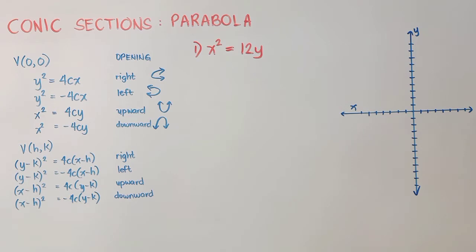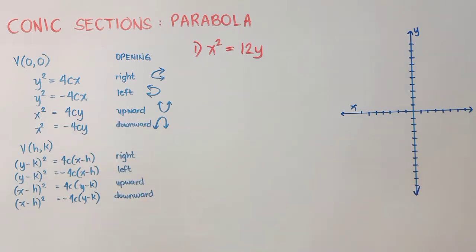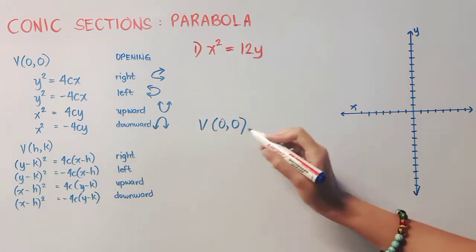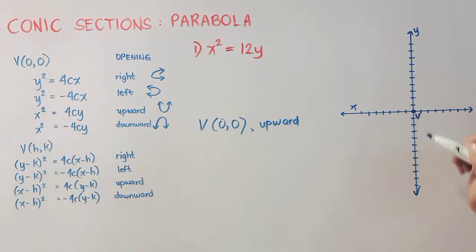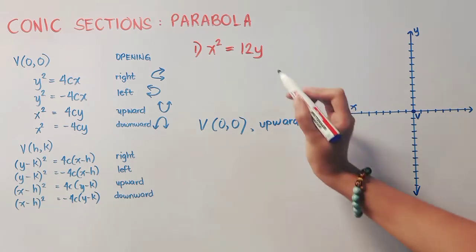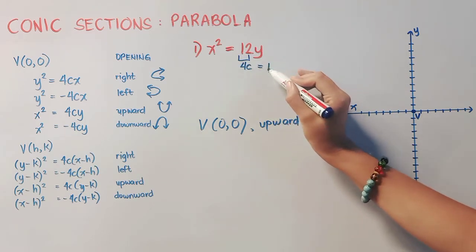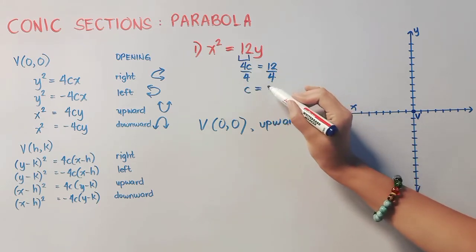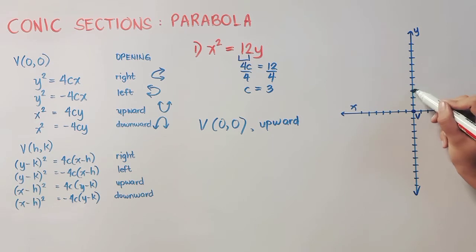We will use the following forms as a guide for graphing. x² = 12y matches the upward-opening form, meaning our vertex is (0, 0) and the parabola opens upward. Plotting that, we label V at (0, 0). Going back, the coefficient 12 is equivalent to 4c, so we divide both sides by 4. Therefore, c = 12 ÷ 4 = 3. Using this value, we count 3 units upward to get our focus.